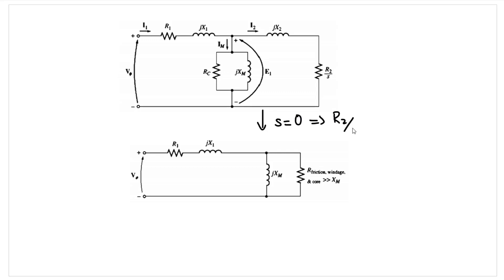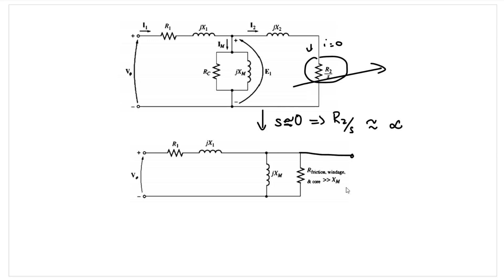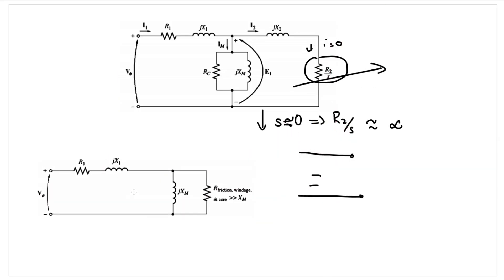Since slip is approximately 0, r2/s is approximately infinity, so an infinite resistance is offered by that path — no current flows through it, meaning an open circuit. We also combine the resistances rc, r_friction, and r_winding into one resistance. Our equivalent circuit then reduces and can be used to calculate the parameters r1, x1, and xm.